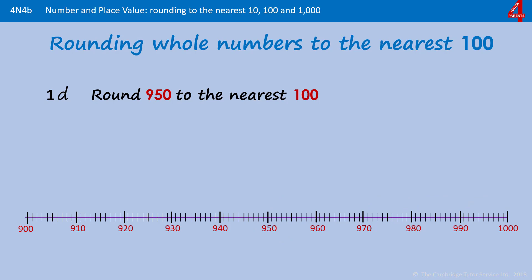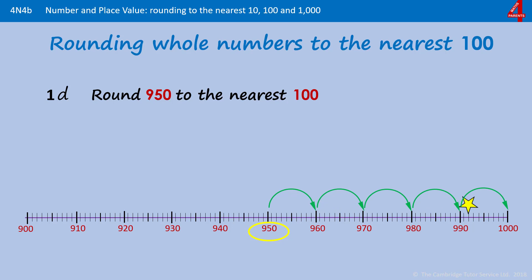950 rounded to the nearest 100. Pause the video and have a go. 950 is the same distance from 900 and 1000, but the rule is we round it up. 950 rounded to the nearest 100 is 1000.